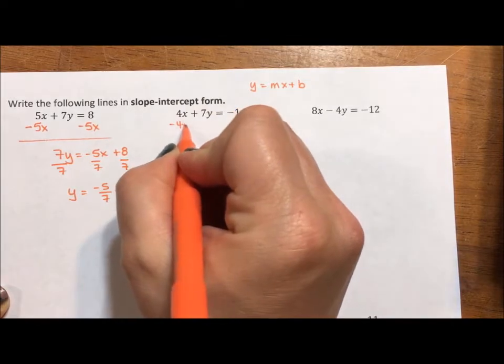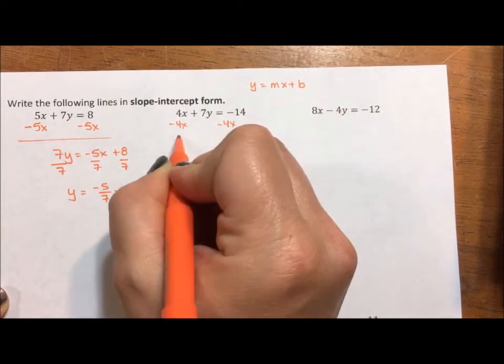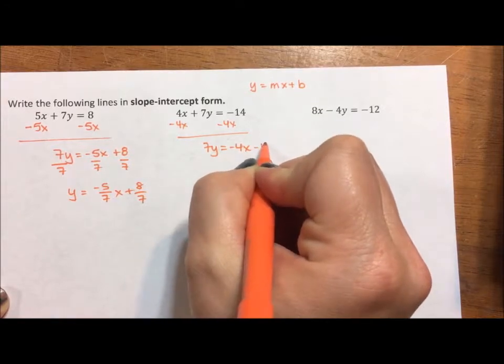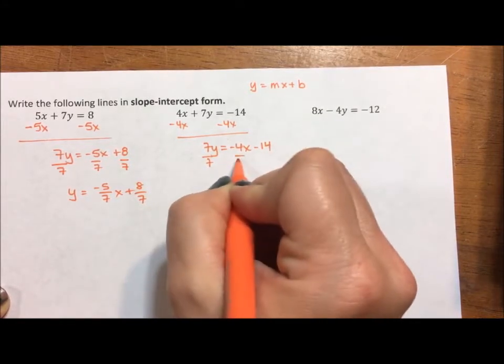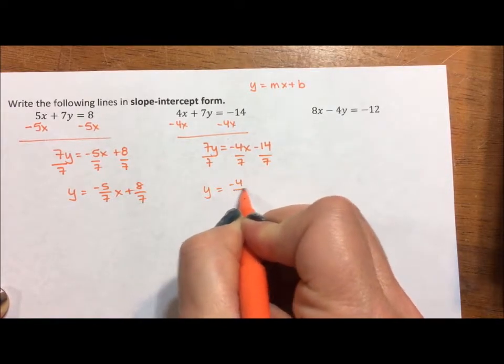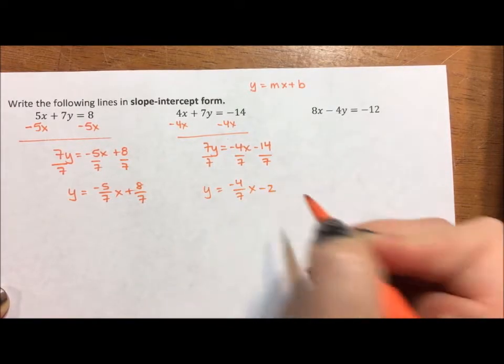Two steps. Subtract 4x from both sides. 7y equals negative 4x minus 14. Divide by 7. y equals negative 4/7 x minus 2.